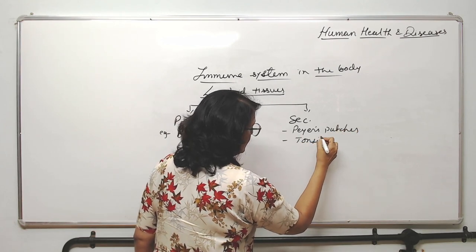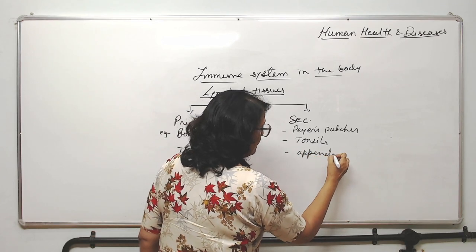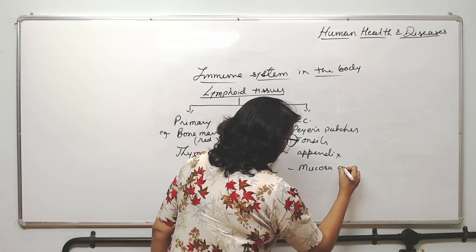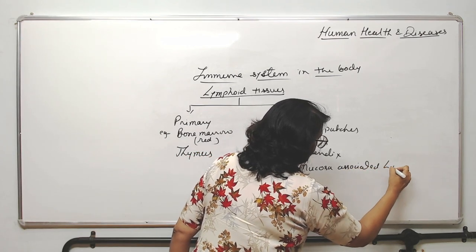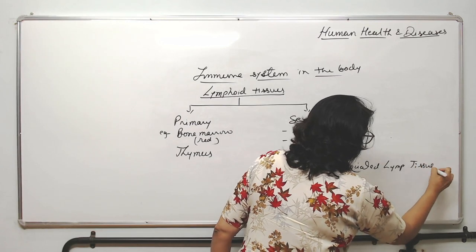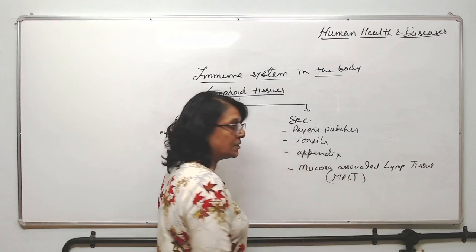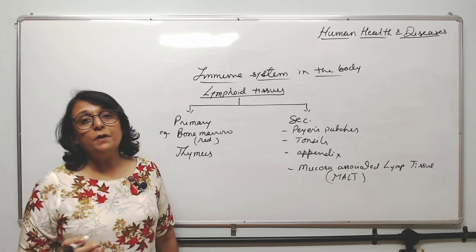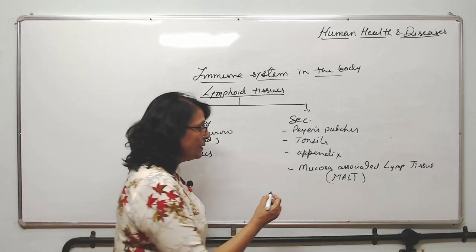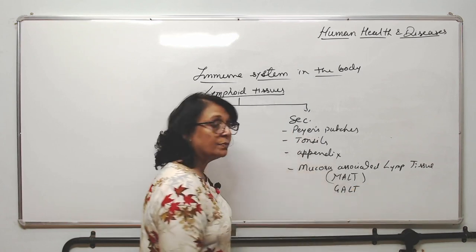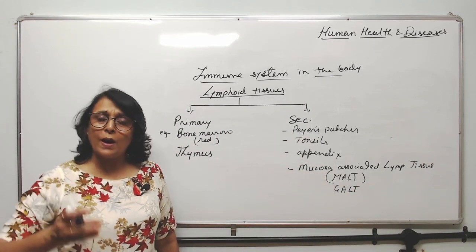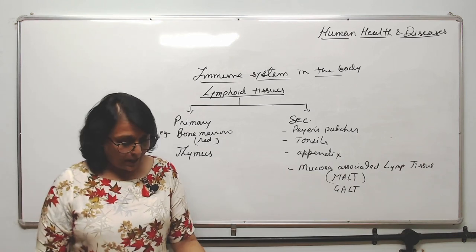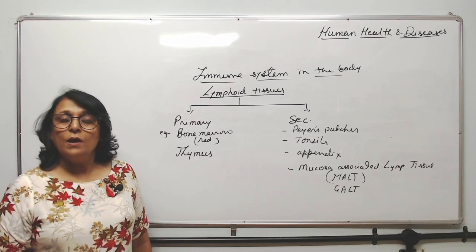Secondary lymphoid tissues are many — like Peyer's patches, tonsils, even appendix. Even appendix has secondary lymphoid tissue. Then there is mucosa-associated lymphoid tissue, short form MALT, because it is found in mucosa. Mucosa is everywhere. If it is the mucosa of the gut, then it will be called gut-associated lymphoid tissue. It can be in the respiratory tract also, so depending upon the area you can call it by that local name.